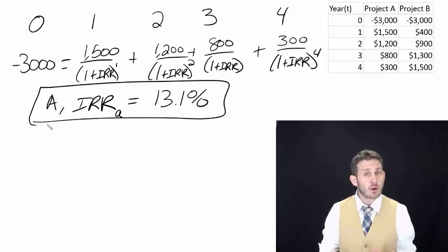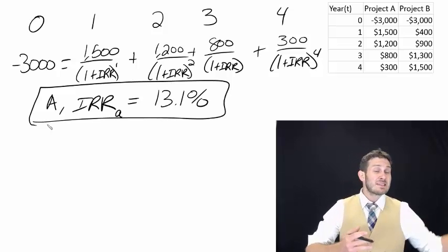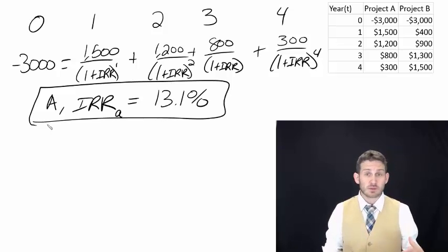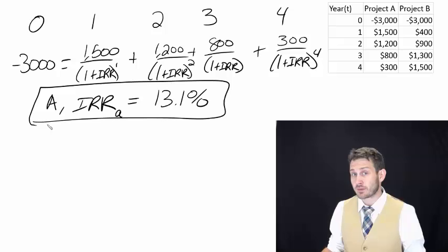However, if my required return is, say, 10%, right? I only need 10% on my money in order to do this project, given its risk and whatnot, then yes, I will do this project. Because it's returning to me 13%, I only need 10%.